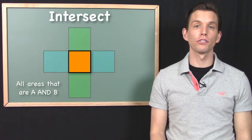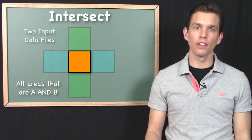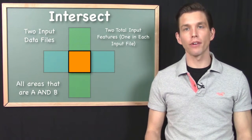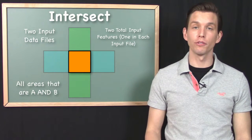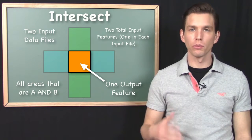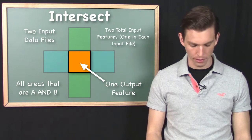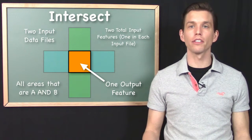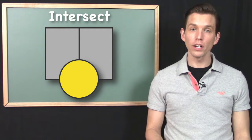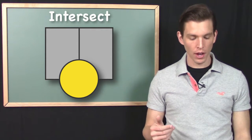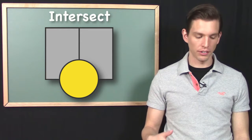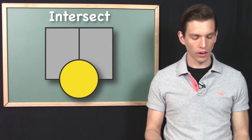Let's look at that in this situation. I've got two input data files, each with one feature, so two features are input into the operator. When I run the intersect operator, I end up with one feature returned, given how the geometry of these features is laid out. Now let's look at another abstract example. Here we have two different vector data files again — one contains two features, these two gray rectangles, and the other data file contains one feature, this yellow circle, overlapping in this way.